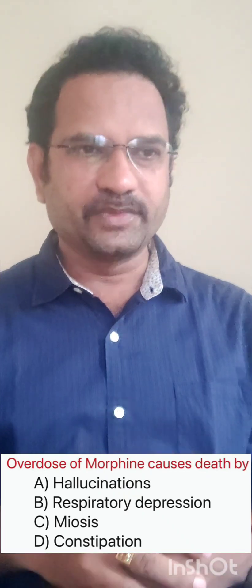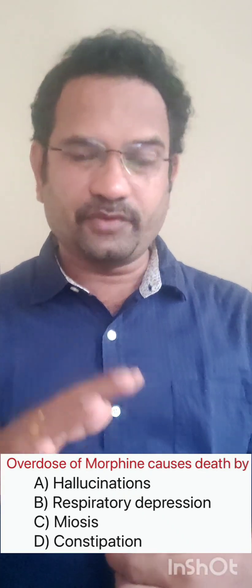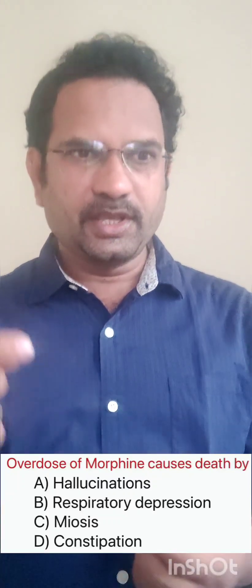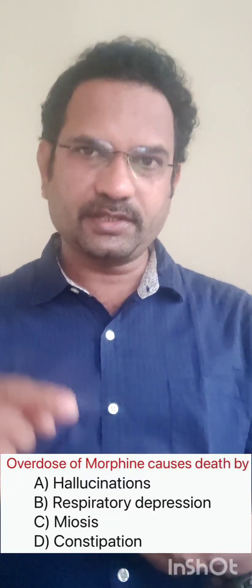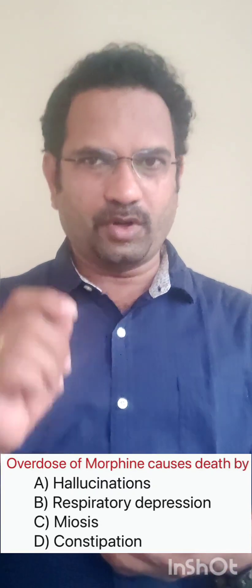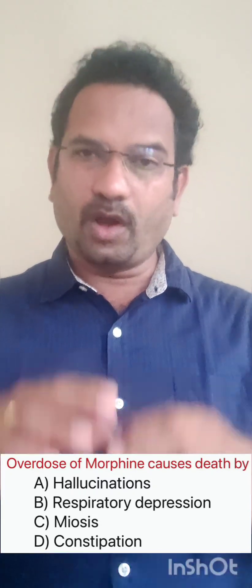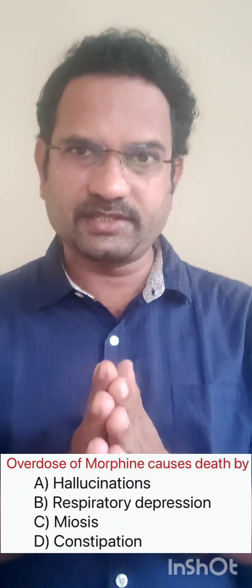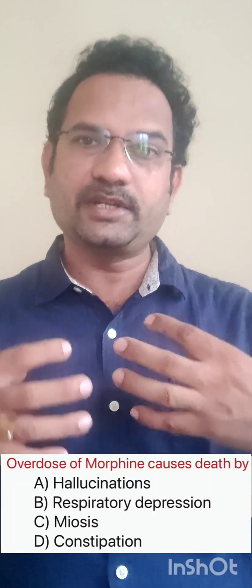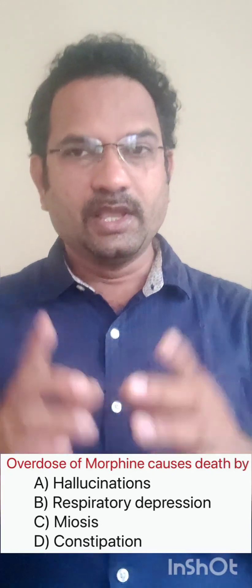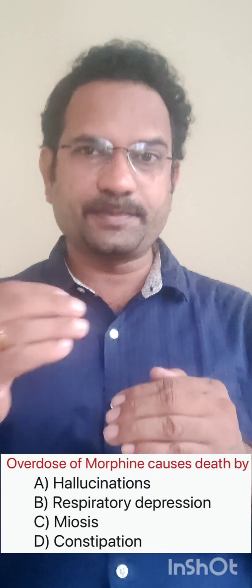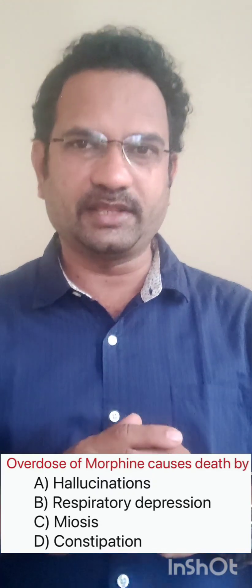Let us see the next question. Overdose of morphine causes death by: hallucinations, respiratory depression, miosis, or constipation. If you see the question, all four are morphine adverse effects. Out of them, which is fatal and causes death is respiratory depression. When morphine overdose is given, respiratory depression occurs and that will cause death. Even general anesthetics — if overdose is given, that causes respiratory depression which will cause death.